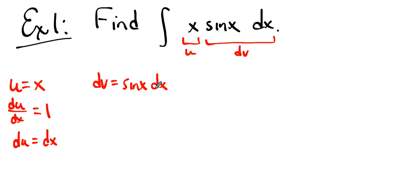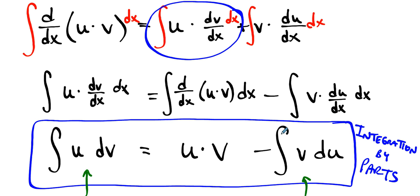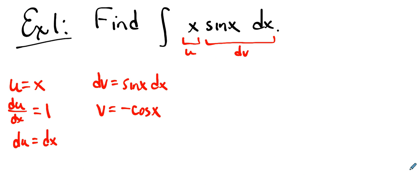If dv is sin(x) dx, then v is any antiderivative of sin(x). Turns out that there's no plus C necessary—why? Because that plus C would get added and subtracted. So we apply the formula. The formula says that the integral of u dv is uv minus the integral of v du.